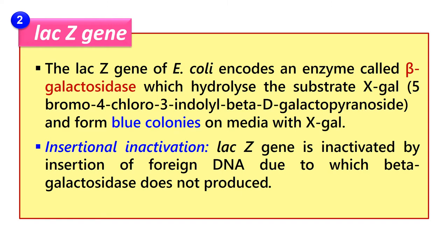How do we use this LacZ gene to identify a particular bacterial colony? In that case we use the insertional inactivation mechanism — we just put our gene of interest into this LacZ gene. Due to this, the LacZ gene gets deactivated. Now the bacteria which carry the recombinant plasmid, in which the LacZ gene has been inactivated due to the insertion of a foreign gene, cannot hydrolyze the X-GAL substrate present in the media. So they will give white colonies, which distinguishes them from non-recombinant cells. Non-recombinant cells have a functional LacZ gene and form blue colonies, while recombinant plasmids do not have a functional LacZ gene, so they produce white colonies. This selection procedure is known as blue-white selection.